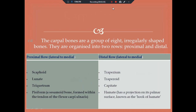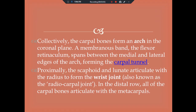The carpal bones are a group of eight irregularly shaped bones organized into two rows — proximal and distal. The proximal row consists of scaphoid, lunate, triquetrum, and pisiform, which is a sesamoid bone formed within the tendon of the flexor carpi ulnaris. The distal row consists of trapezium, trapezoid, capitate, and hamate, which has a projection on its palmar surface known as the hook of hamate. Collectively, the carpal bones form an arch in the coronal plane. A membranous band, the flexor retinaculum, spans between the medial and lateral edges of the arch, forming the carpal tunnel. Proximally, the scaphoid and lunate articulate with the radius to form the wrist joint, also known as the radiocarpal joint. In the distal row, all carpal bones articulate with the metacarpals.